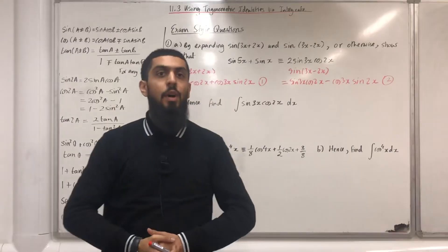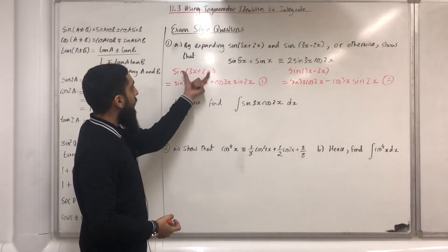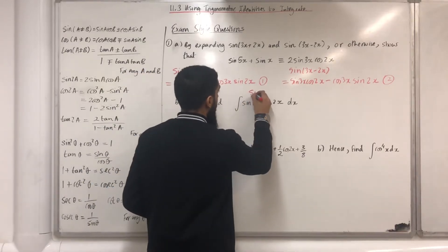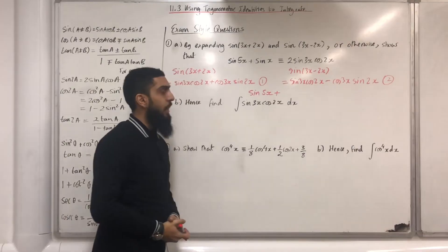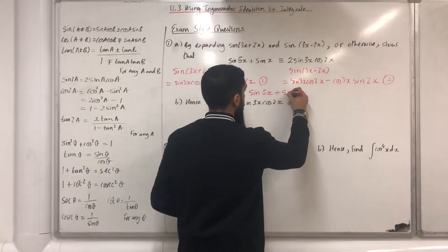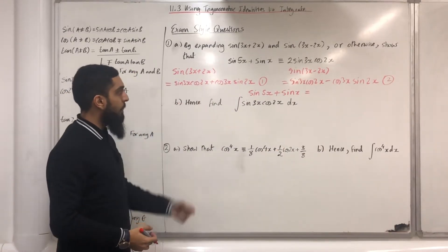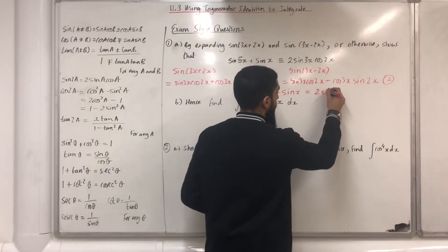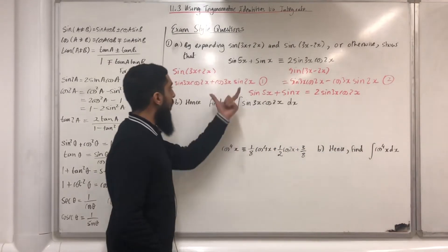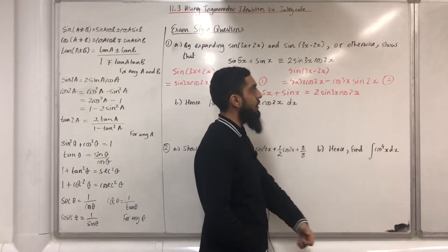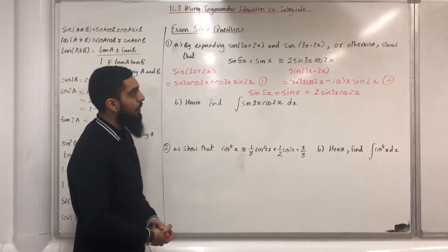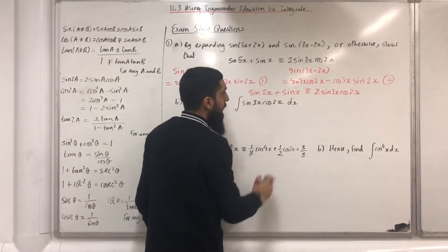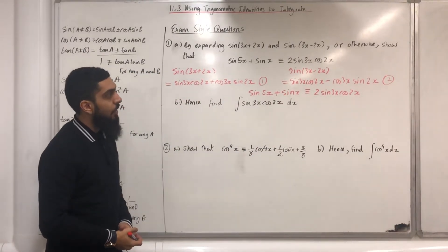My next step is to add equation 1 and equation 2. sin(3x + 2x) is just sin 5x, and sin(3x - 2x) is just sin x. On the right-hand side, sin 3x cos 2x plus sin 3x cos 2x gives 2 sin 3x cos 2x. The terms cos 3x sin 2x and minus cos 3x sin 2x cancel to give 0. Therefore sin 5x plus sin x is identical to 2 sin 3x cos 2x, as required.